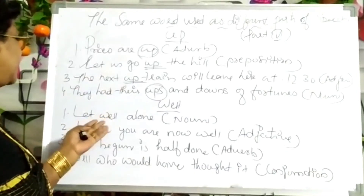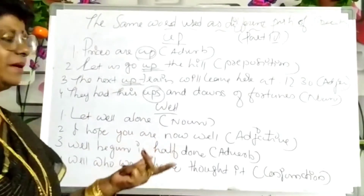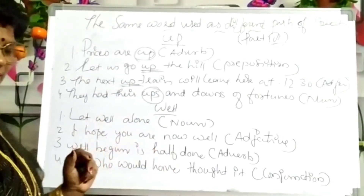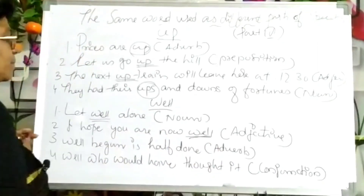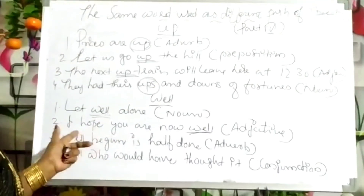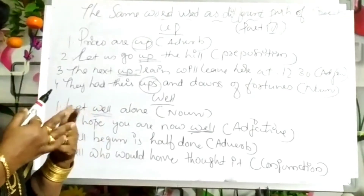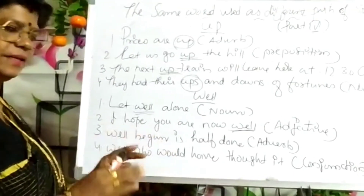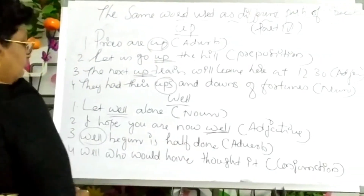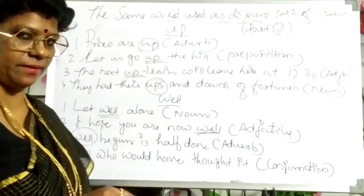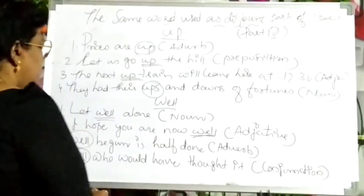Next word: 'well.' In 'Let well alone,' 'well' shows a noun. In 'I hope you are well,' 'well' shows an adjective. In 'Well begun is half done' — meaning if we start anything nicely, that is half the work done — 'well' shows an adverb. In 'Who would have thought it? Well,' 'well' shows a conjunction.